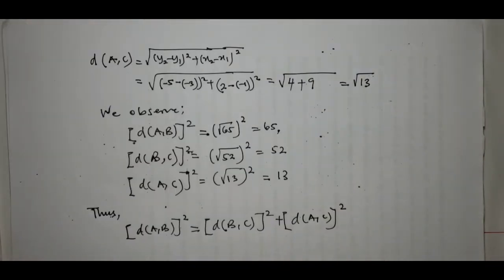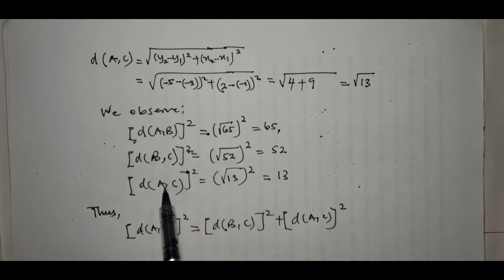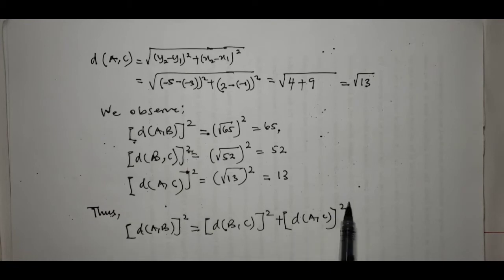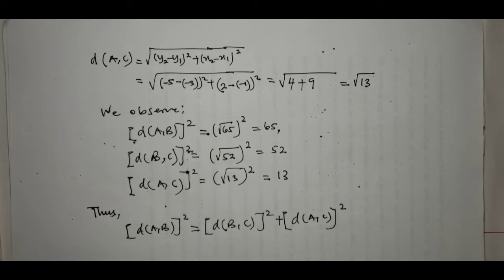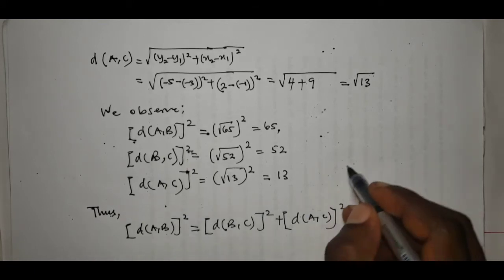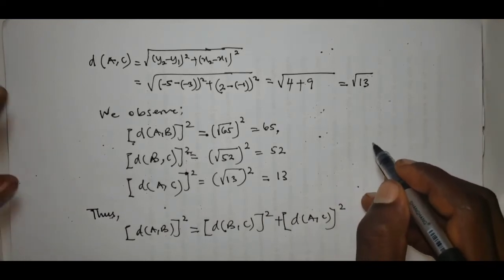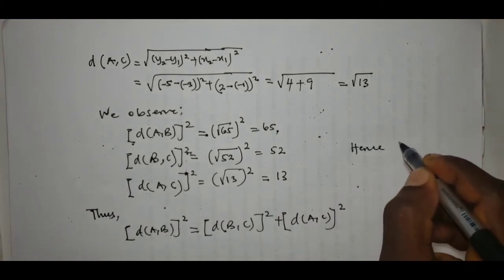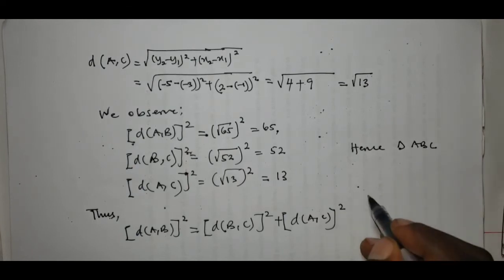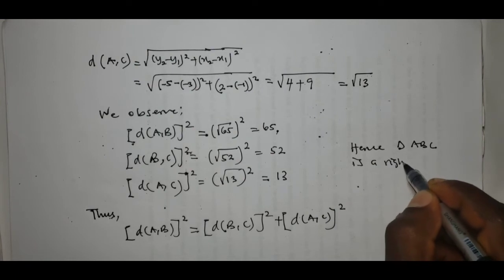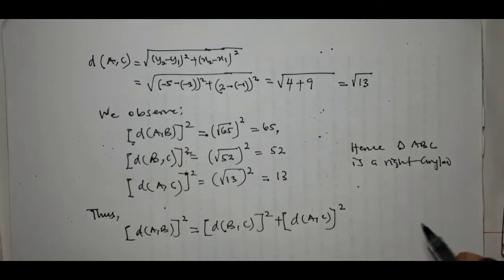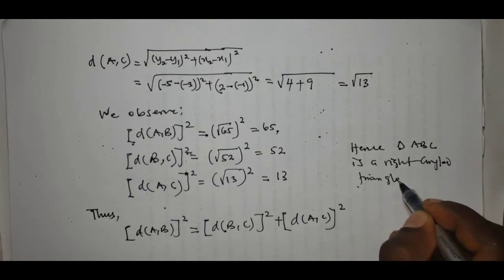So what do we observe? After finding the distances between points A and B, B and C, and A and C, we observe that the three distances relate just like the three sides of a right-angle triangle. What do we conclude? Hence, triangle ABC is a right-angle triangle.